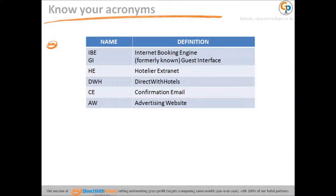Direct With Hotels is very fond of using acronyms. Here are acronyms that you will hear throughout the video. IBE stands for Internet Booking Engine — the current name of the reservation system. GI stands for Guest Interface, which is the former name of the Internet Booking Engine. The name changed because industry-wise, the more acceptable terminology is 'Booking Engine,' not 'interface.'